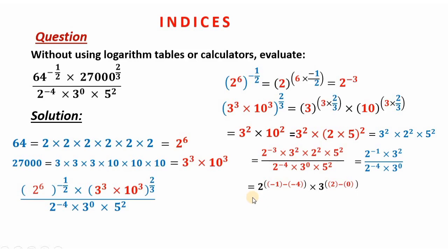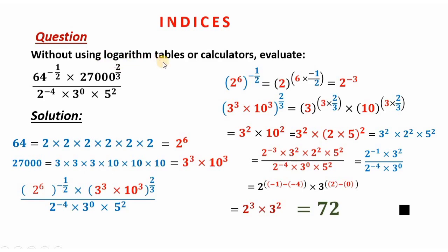Simplifying: negative 1 minus negative 4 is positive 3, so we get 2 power 3; and 2 minus 0 is 2, so we get 3 power 2. Therefore 2 power 3 is 8, 3 power 2 is 9, and multiplying gives our final answer of 72. That is how we apply indices to solve problems where we are told not to use logarithm tables or calculators — applying laws of indices and cancelling where possible.